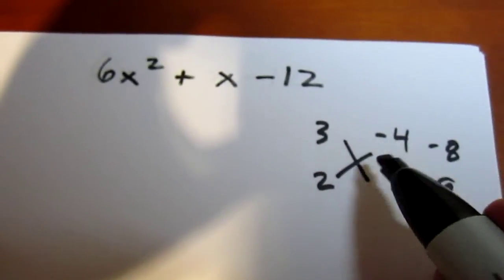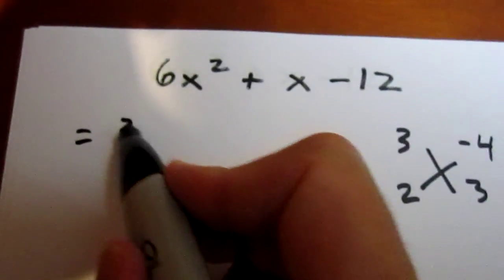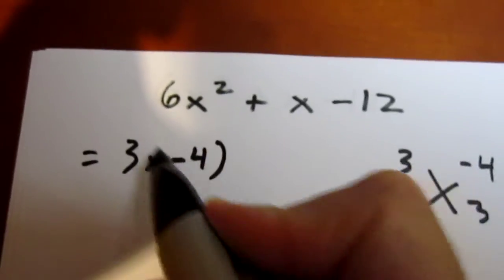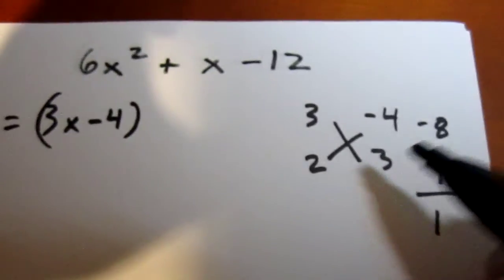So I can just now read across. 3x minus 4 times 2x plus 3.